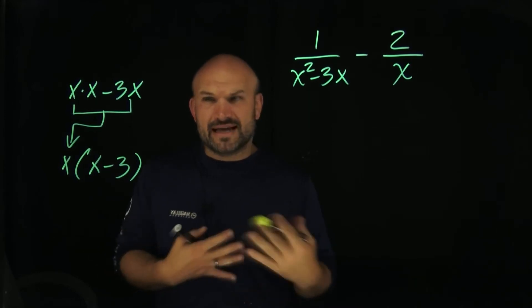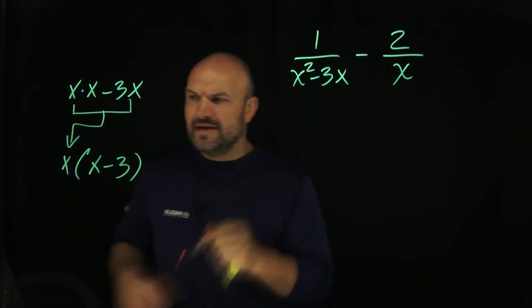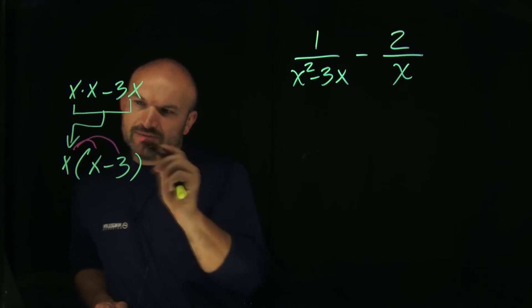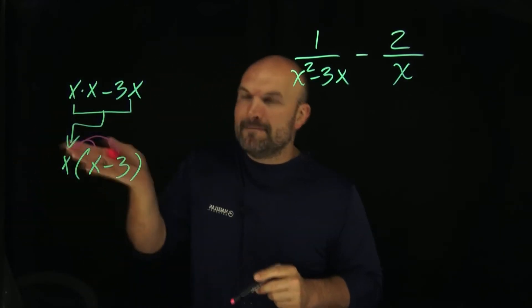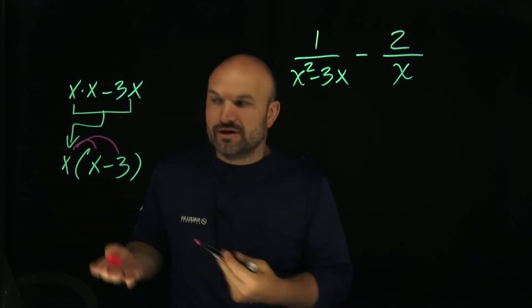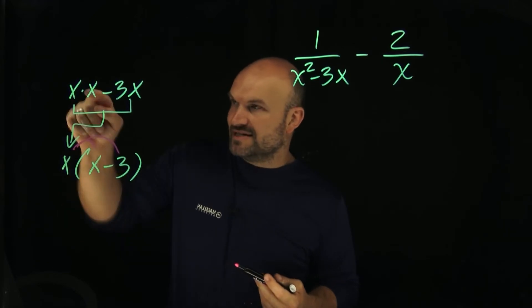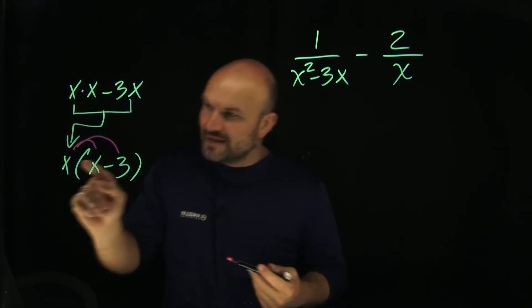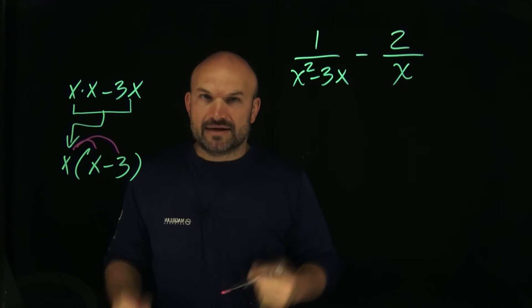To check, simply multiply the term you factored out back through the parentheses via the distributive property. You'll notice that x times x gives you back x squared, and x times negative 3 gives you that negative 3x. So we're good there.